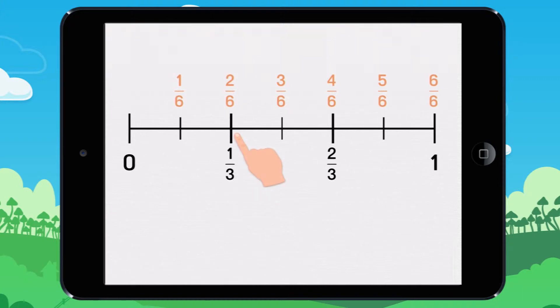We can see that two sixths and one third are plotted on the same point on the number line because they are equal.